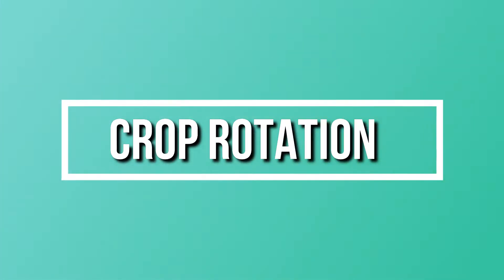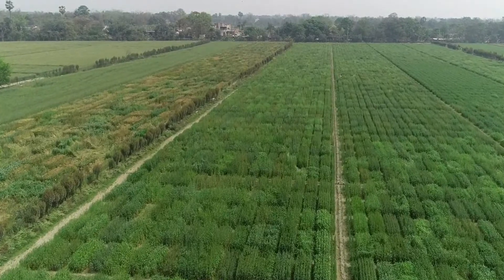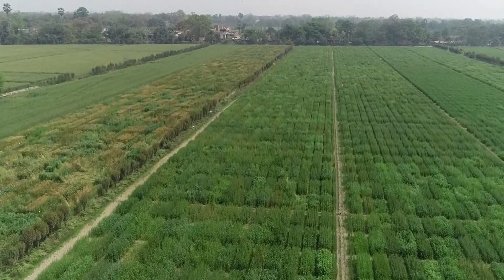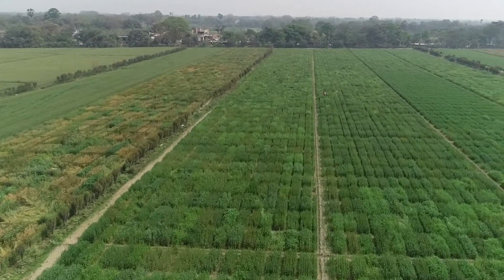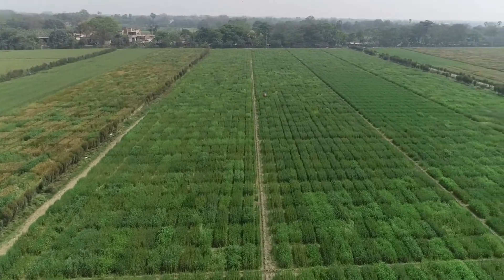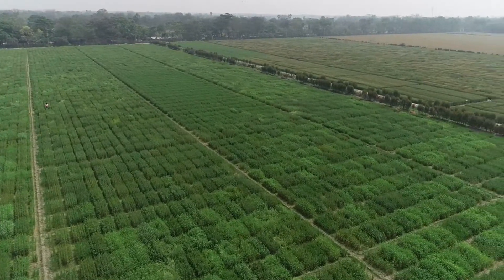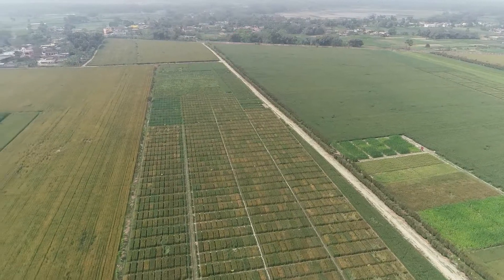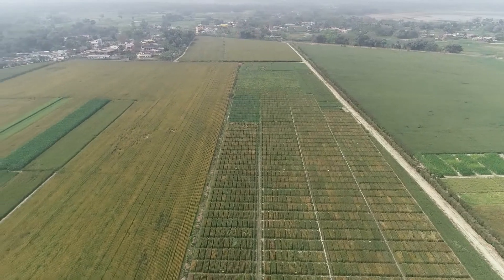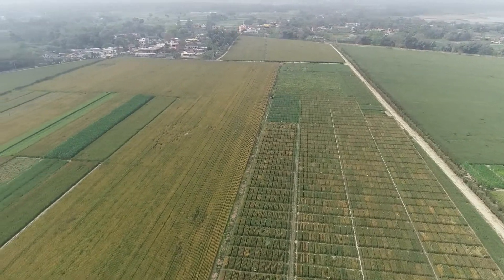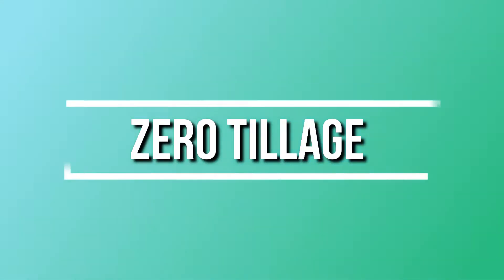Crop rotation is the practice of planting different crops sequentially on the same piece of land. It optimizes nutrients in the soil and combats pest and weed pressure.